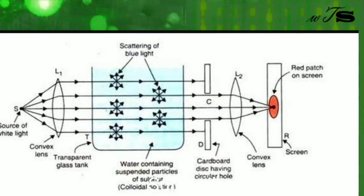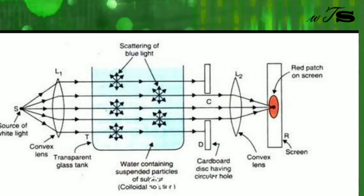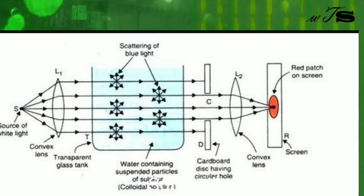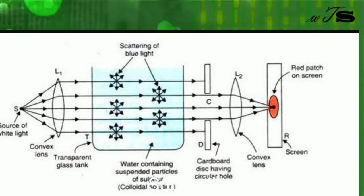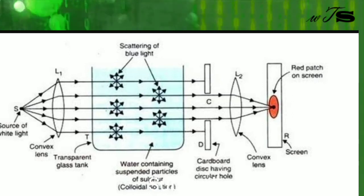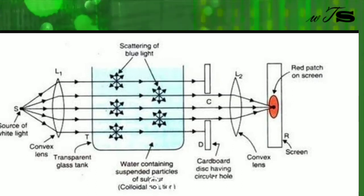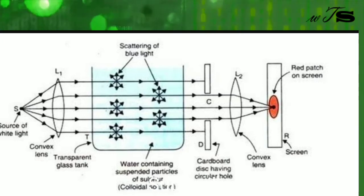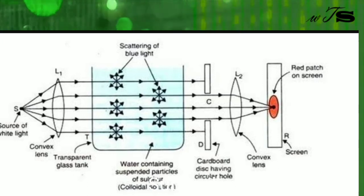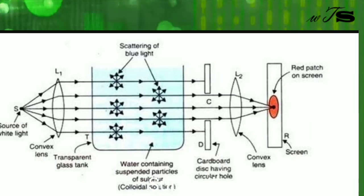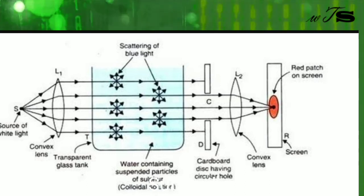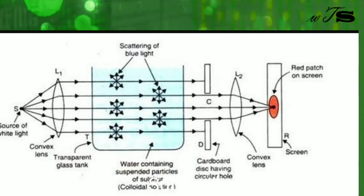The remaining light projected onto the screen appears red because the blue light has been scattered away. This experiment clearly demonstrates how scattering takes place and how different colors result from it. From this experiment, we can clearly understand how blue scattering leads to the blue sky and why the transmitted light appears red, just like at sunrise and sunset.